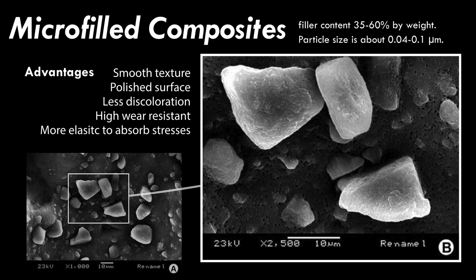Micro-fill composites were introduced in the early 1980s. Their average particle size ranges from 0.01 to 0.04 micrometers, with filler content of 35 to 60% by weight. The small particle size results in a smooth, polished surface resistant to debris and stain formation. However, because of the lower filler content, some physical properties are inferior — they exhibit low fracture toughness and increased marginal breakdown. They are indicated for anterior tooth restoration as enamel layer replacement or in cervical abfraction lesions.